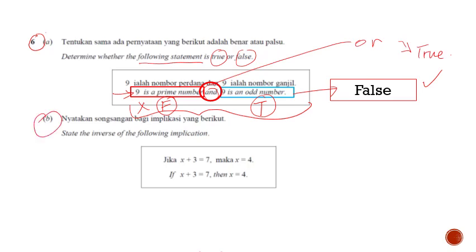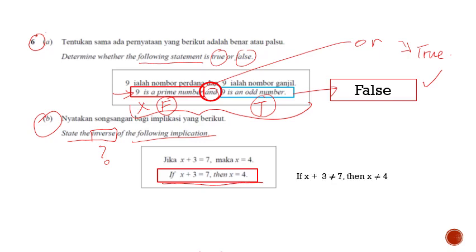For part B, state the inverse of the following implication. Inverse means the 'not' of the following implication. So if x equals 7, then x equals 4. The inverse is: you just change both parts to 'not' — 'if x is not 7, then x is not 4.' You get one mark for the first part and one mark for the second part.